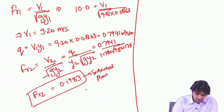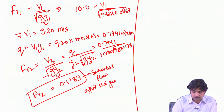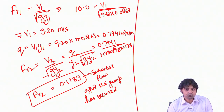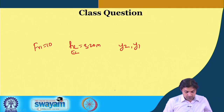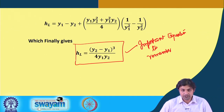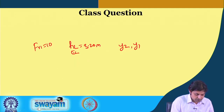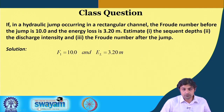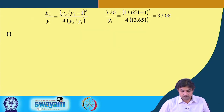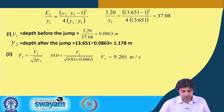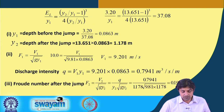Fr2 = 0.1983 confirms subcritical flow after the jump has occurred. This is a straightforward problem — we used the formulas step by step. The energy loss formula HL = (y2 − y1)³ / (4·y1·y2) is very important here. The solution on the slides shows the sequent depth ratio, energy loss, velocity V1 = 9.2 m/s, discharge intensity, and Froude number after the jump — same as what we did on the whiteboard.